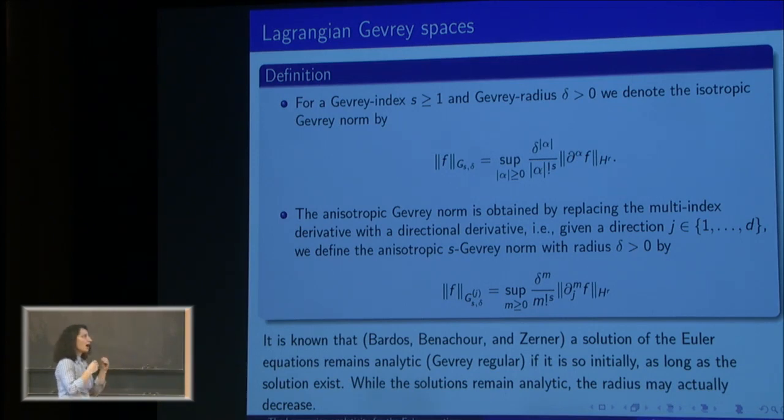It's like considering almost analytic functions; they are still smooth but fail to be analytic. If they satisfy the bounds in terms of this factorial to the power s, we call them Gevrey regular. In the anisotropic case, we just fix the direction and then take the supremum of these Taylor coefficients.